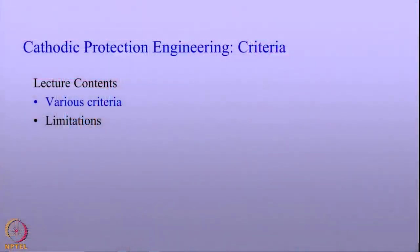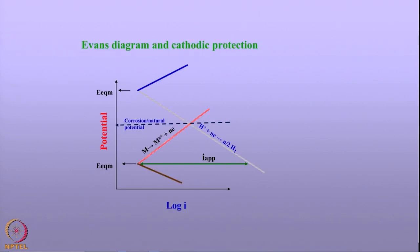Today we shall discuss an important topic of cathodic protection engineering: cathodic protection criteria. In this lecture, we will discuss various types of criteria that are available for cathodic protection and what are the limitations of these criteria. Let us start with the well-known Evans diagram and how it is related to cathodic protection.